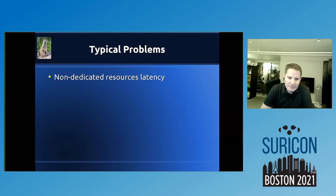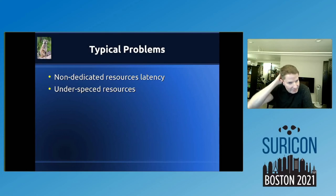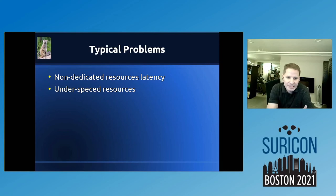Typical problems: non-dedicated resources — if you're doing shared CPU you might see latency problems. Even with a level-one hypervisor, sharing isn't there yet for speed and accuracy. Underspecked resources — not enough RAM or VRAM dedicated to your virtual sensor — are easy to spot. Most hypervisors have resource monitoring; if it's pegged to the top, that's easy to fix in a virtual environment by giving it more RAM or adding more CPU cores.